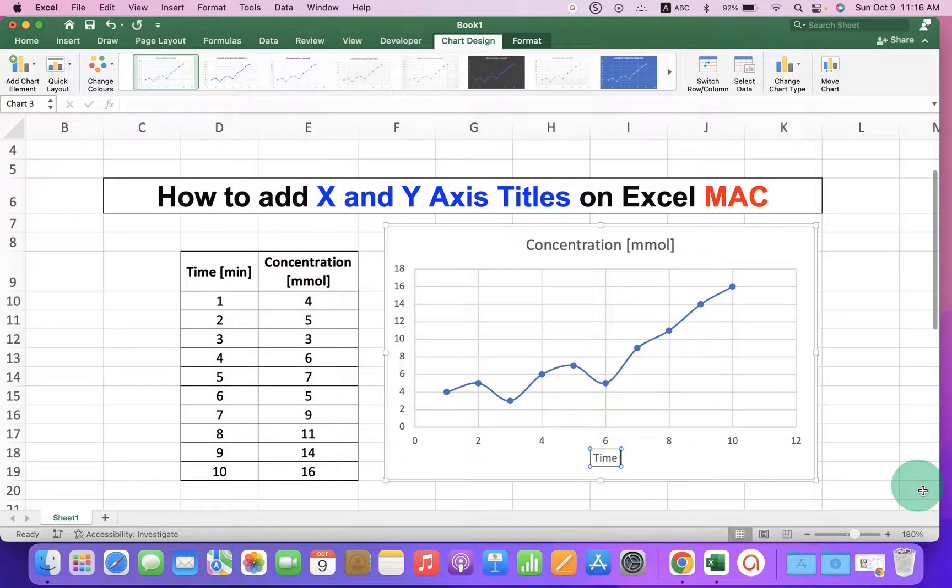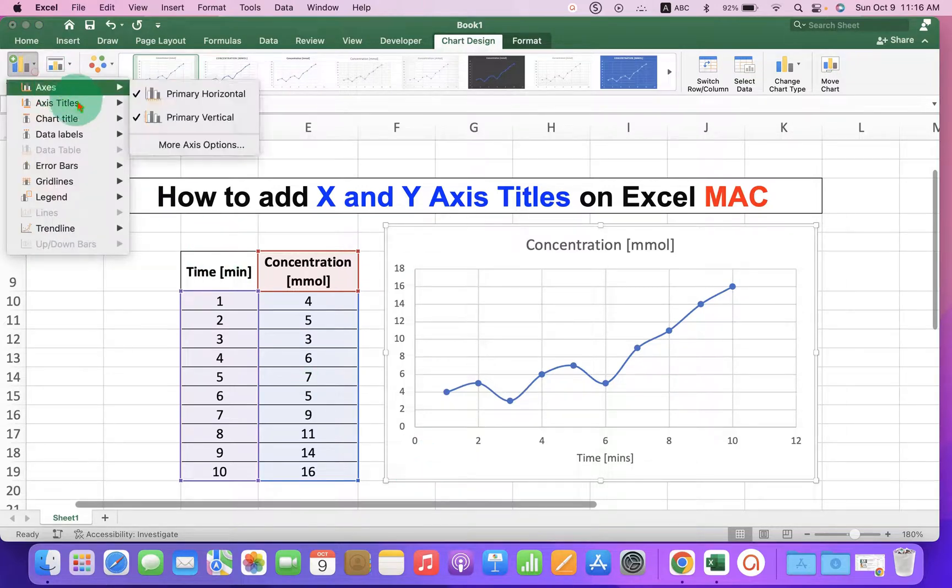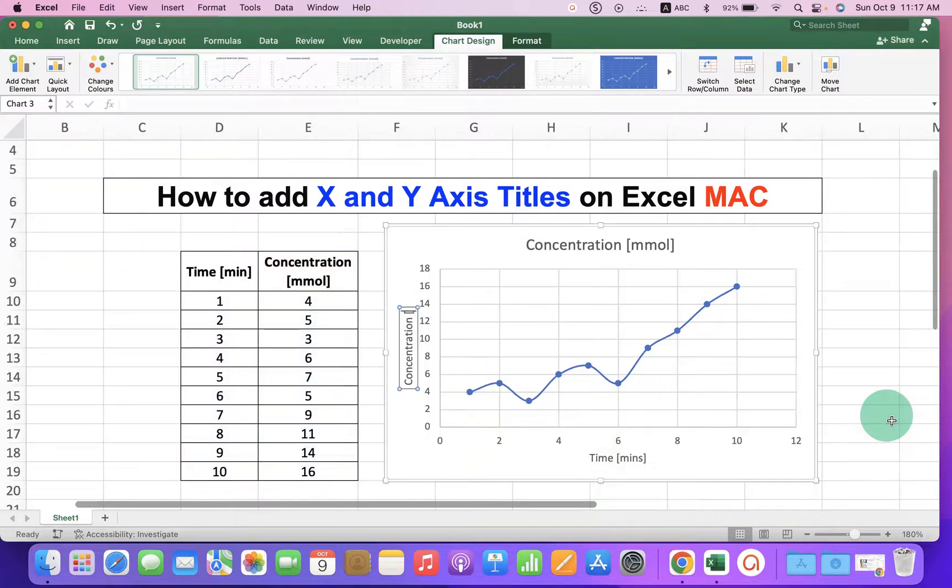Just type inside the axis box what you want and now to add the Y-axis title, go back to the add chart element and this time select primary vertical and type what you want.